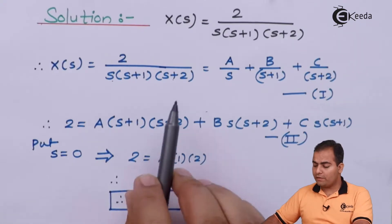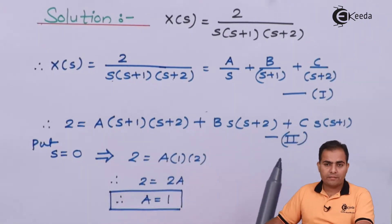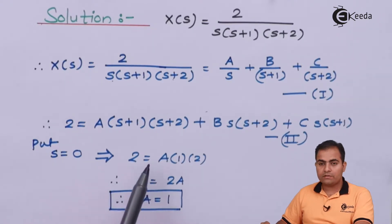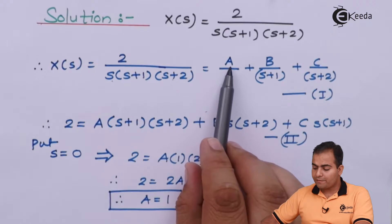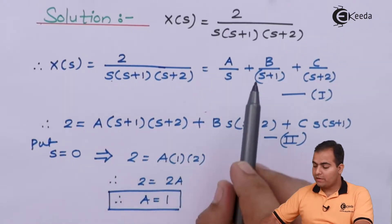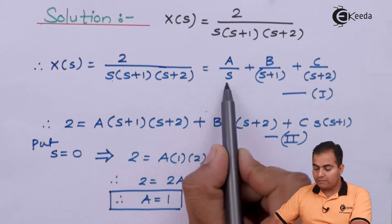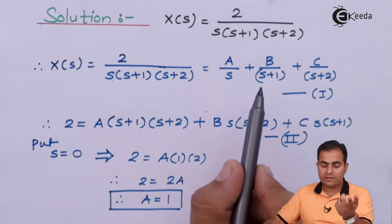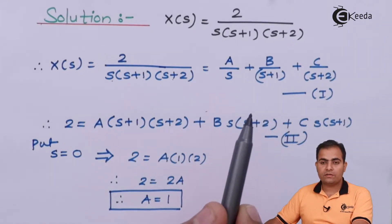Similarly, we will calculate the values of B and C. There is a shortcut method: in the denominator of A we have the S term, that's why we replaced S equal to 0. We have to equate the pole value equal to 0, and whatever value of S results, substitute that in the equation.